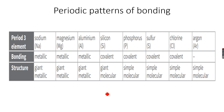Silicon, phosphorus, sulfur and chlorine have atoms that are covalently bonded to each other. The structure of silicon is giant molecular. Phosphorus, sulfur and chlorine are simple molecular structures, which means they have intermolecular forces between their molecules.